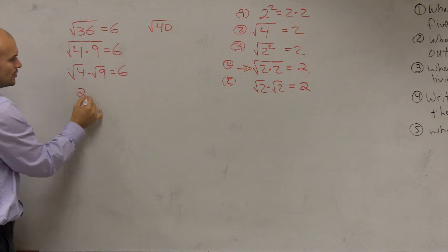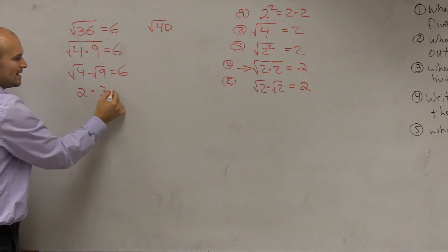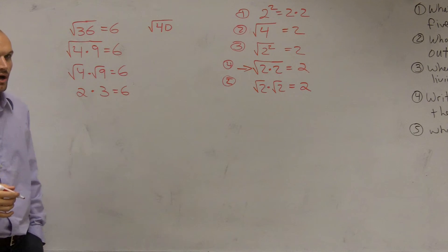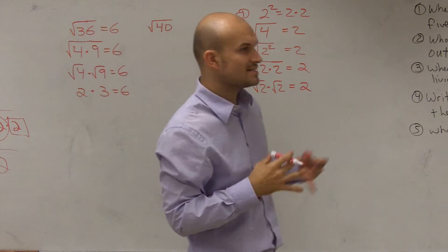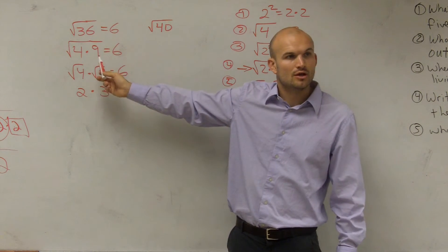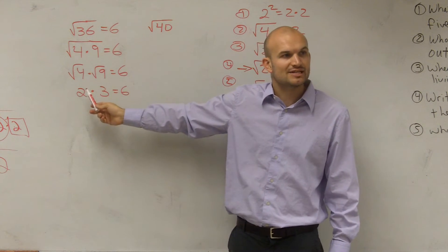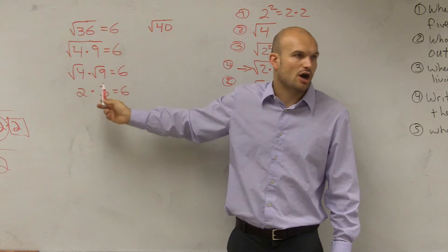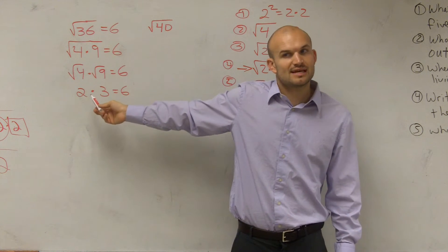Well, what's the square root of 4? 2. What's the square root of 9? 3. So that means that equals 6 as well. So it's very important for you guys to see and understand this, that we can, if we have two numbers under the radical, we can break them up as a multiplication and then solve each one of them independently. We're still getting the same answer.